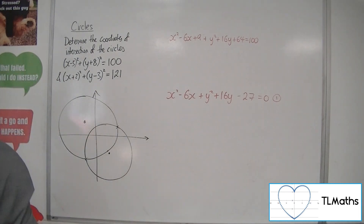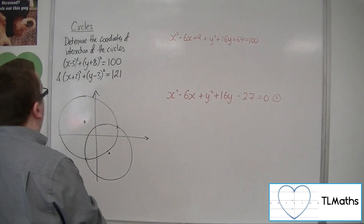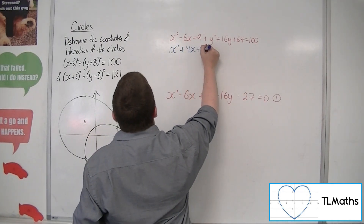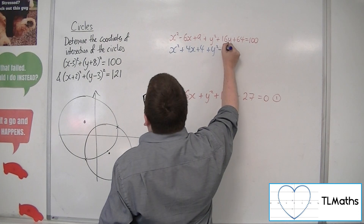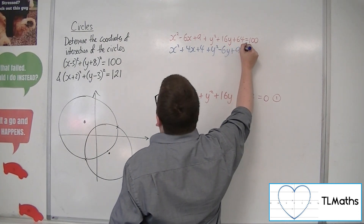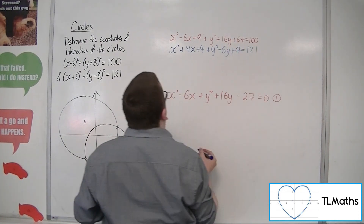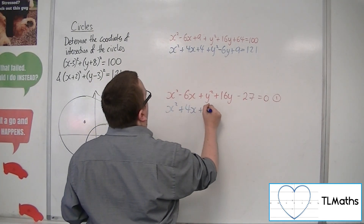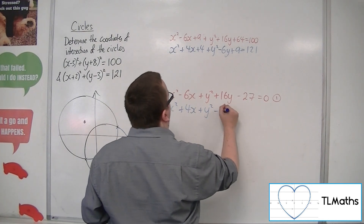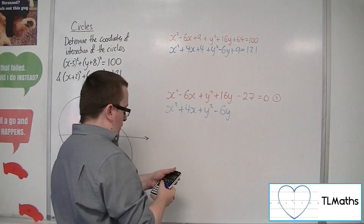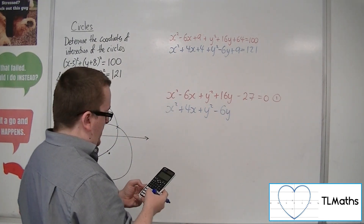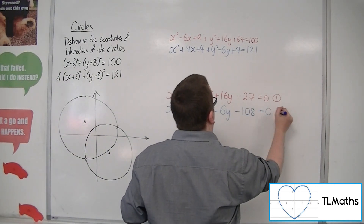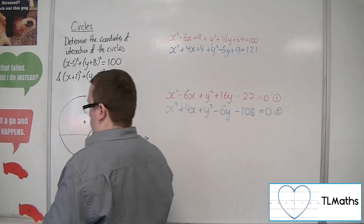Now for the second circle, let's do the same. So x squared plus 4x plus 4 plus y squared minus 6y plus 9 equals 121, giving x squared plus 4x plus y squared minus 6y minus 108 equals 0. Let's call that equation number 2.